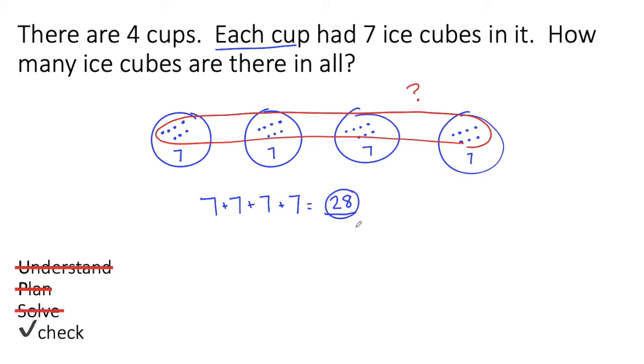Now that we did the math, it's time to check our work. Let's see if our answer makes sense. We knew that there were four cups and there were seven ice cubes in each cup. So we expected to have a bigger number because we were putting seven with seven with seven with seven. And we got 28. That makes sense because that's a lot of ice cubes.